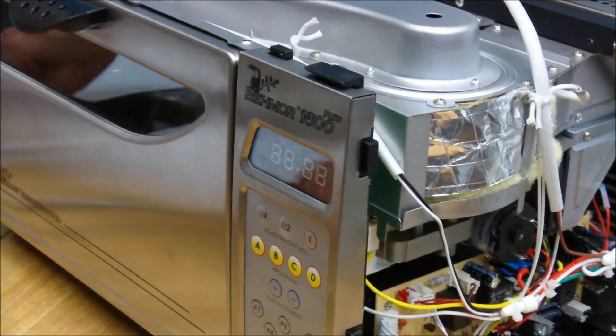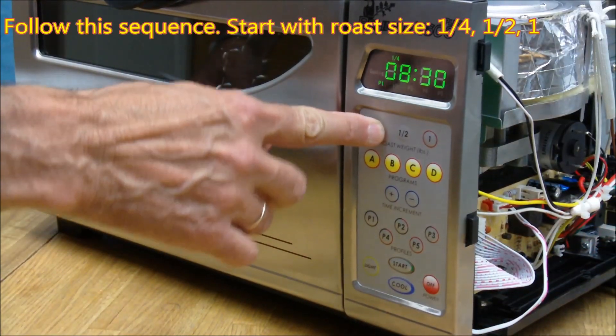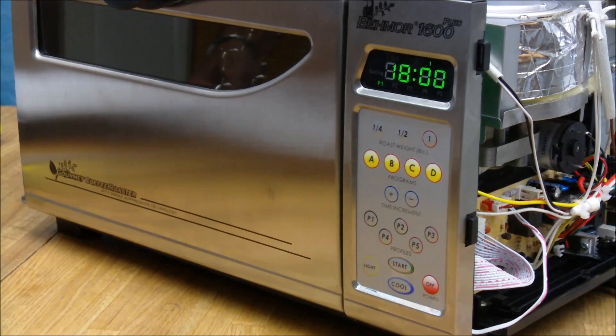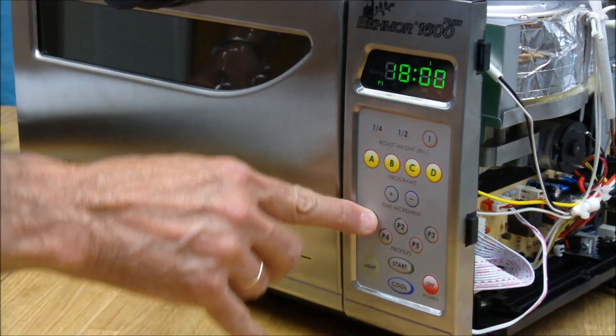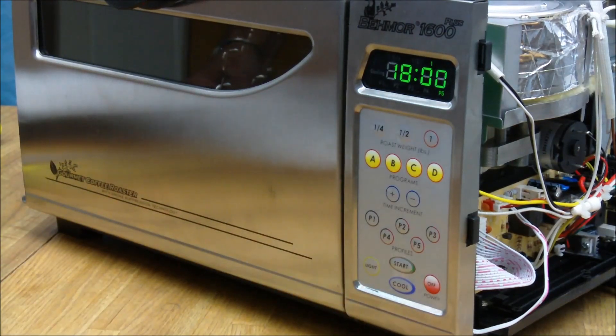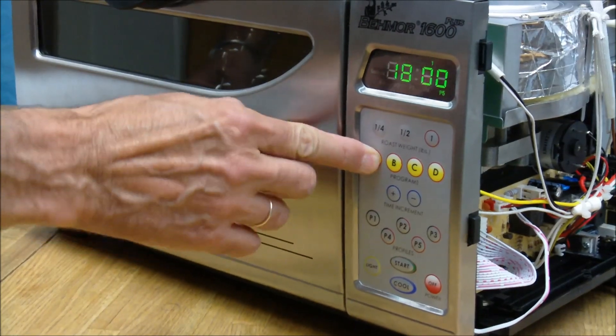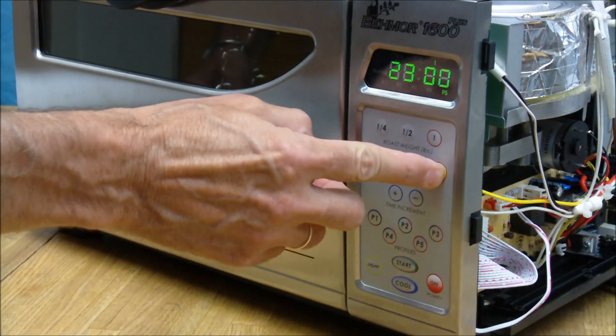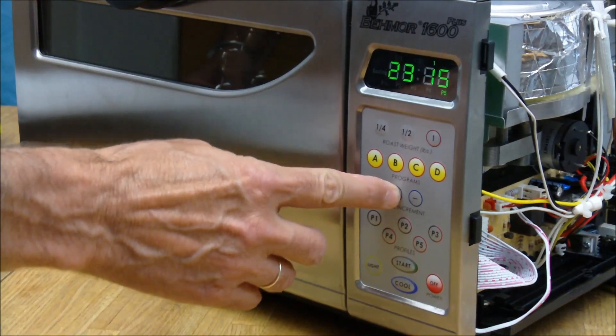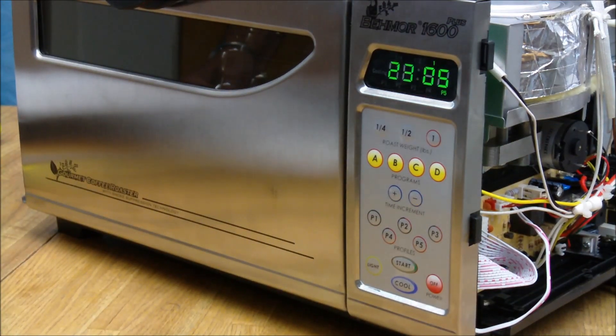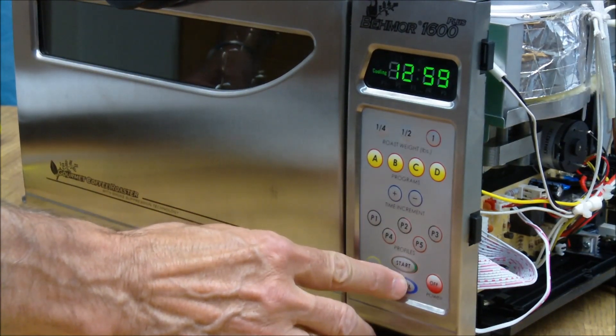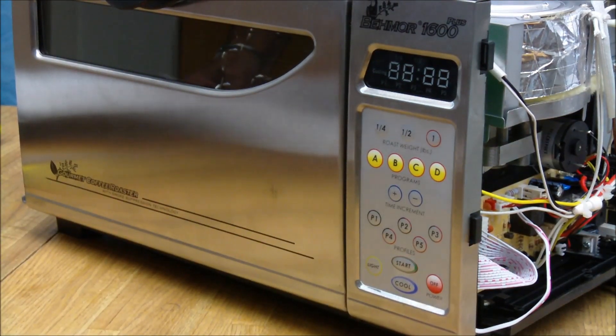And this is a good time to test and make sure the electrical connections are working. Next, profiles, starting with P1 through P5, noting changes on the display. Next, programs A through D. Next, press plus and then minus, noting the increments, and then light, cool, and lastly, off. Everything seems to be working fine. Let's put the rest of it together.